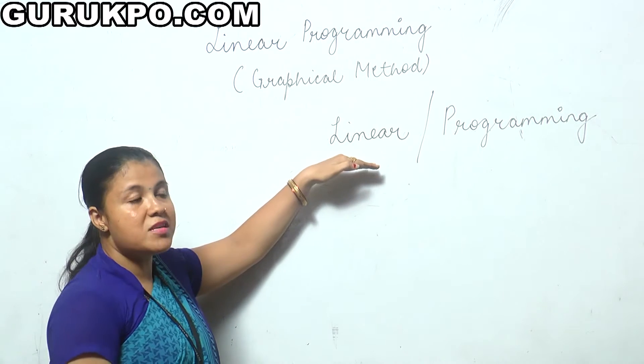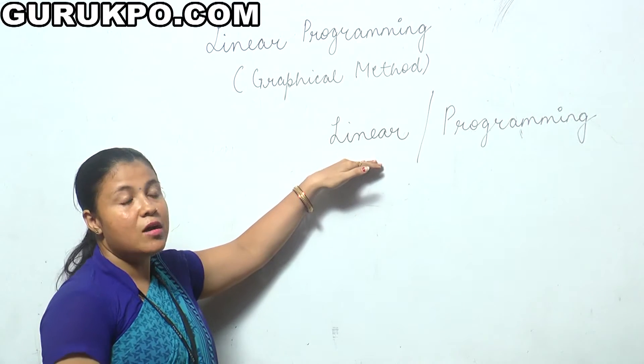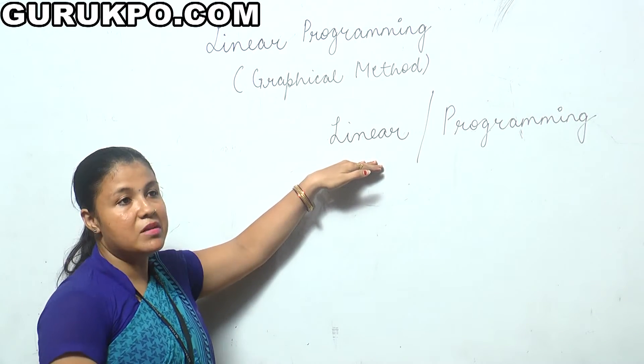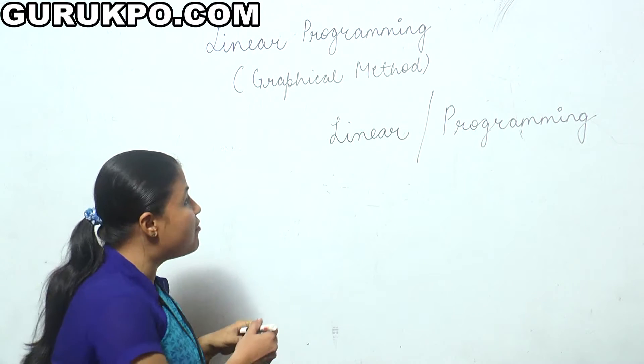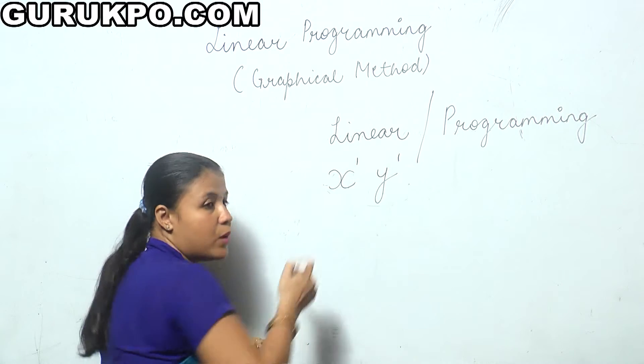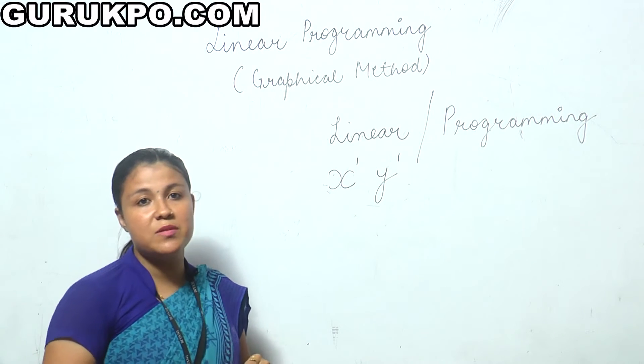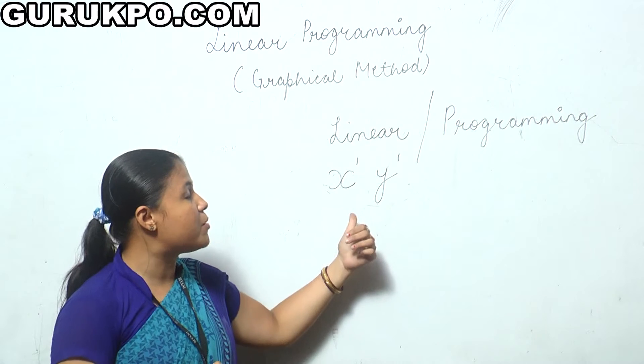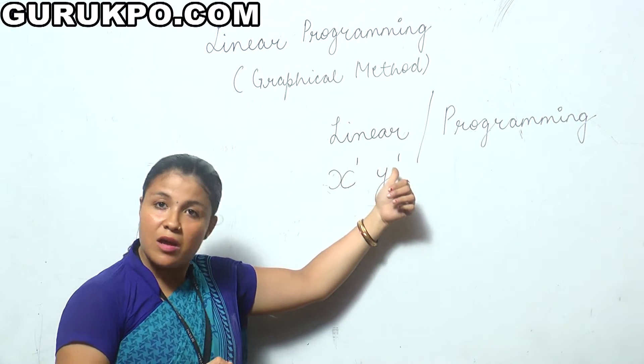The word Linear, what does it mean? The term Linear means all the relations among the variables are linear, that is the power of the variables we are going to take is raised to power 1. All variables in Linear Programming have power 1.